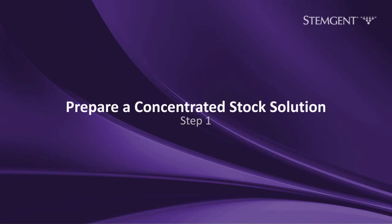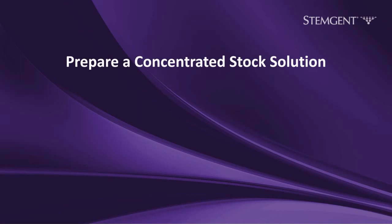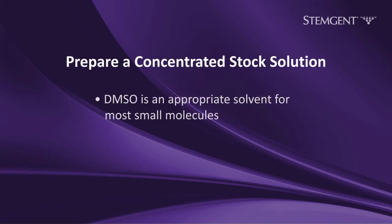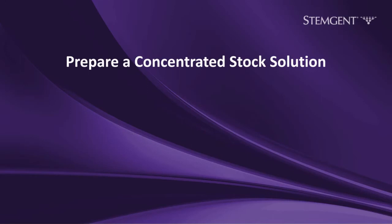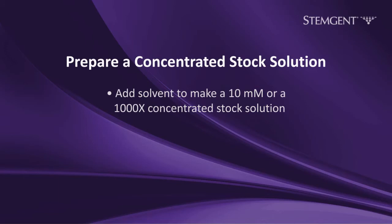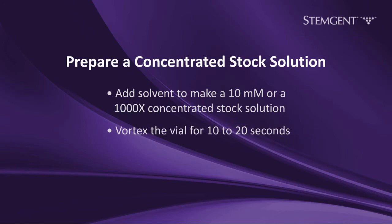Step 1: Prepare a concentrated stock solution. Lyophilized small molecules must first be reconstituted in an appropriate solvent to make a concentrated stock solution. Dimethyl sulfoxide, or DMSO, is often used as an initial solvent because it lends to the increased stability of the frozen small molecule solutions over time. To prepare a concentrated stock solution, add the appropriate amount of DMSO to the entire contents of the vial to make a 10 millimolar, or 1000x, solution. Vortex the vial for approximately 10 to 20 seconds to ensure that all of the lyophilized powder is dissolved.